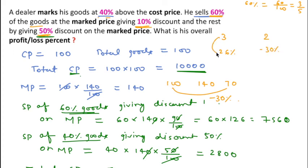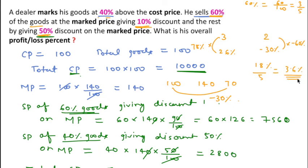So for 3 goods, profit is 3 into 26 = 78%, and for 2 goods, loss is 2 into 30 = 60%. Overall profit percentage is 78 minus 60 = 18% on 5 goods. Dividing by 5 gives 3.6% profit. So I hope you get this question easily. Please subscribe to this channel, and like and share it.